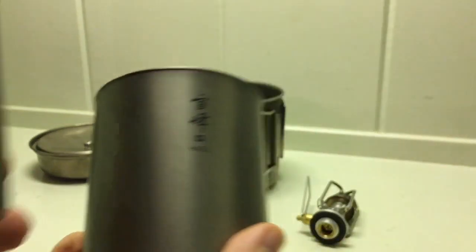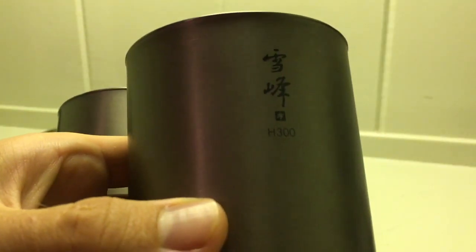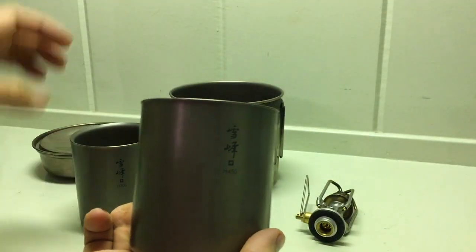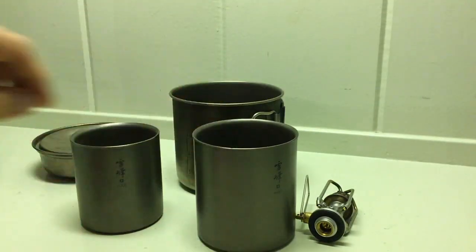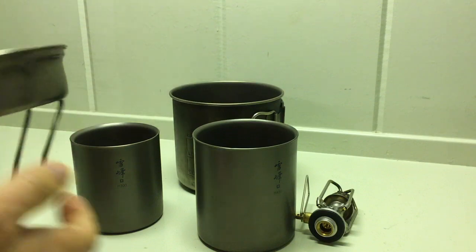These two mugs, the H450 and the H300, nest inside of each other nicely. They're both double-walled.